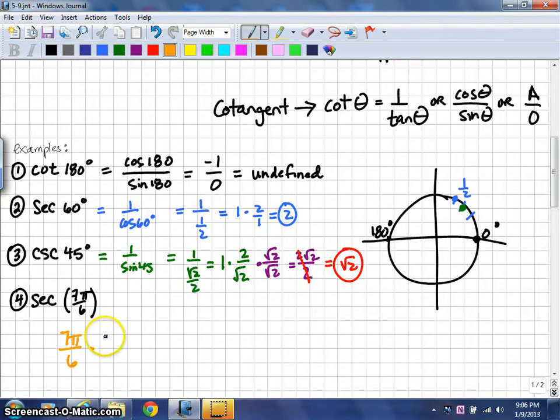To convert a radian measure to degrees, you multiply by 180 over pi. In that case, the pi's will cancel. We could also do some reducing before we multiply straight across.